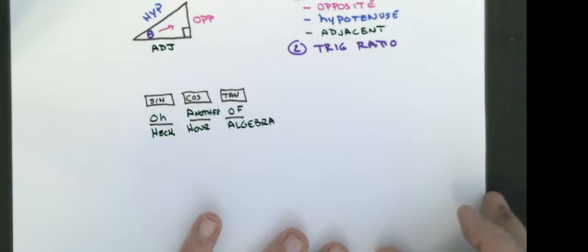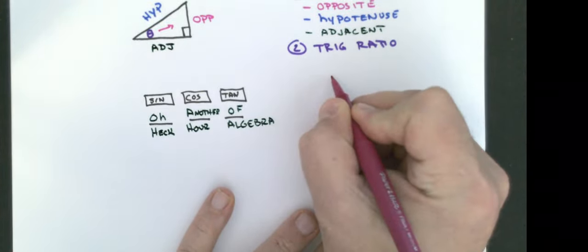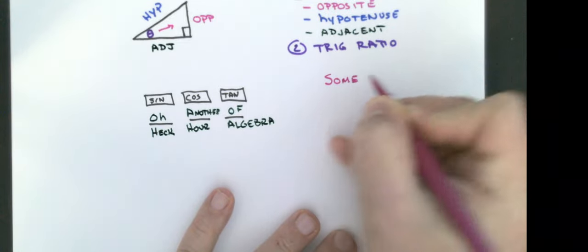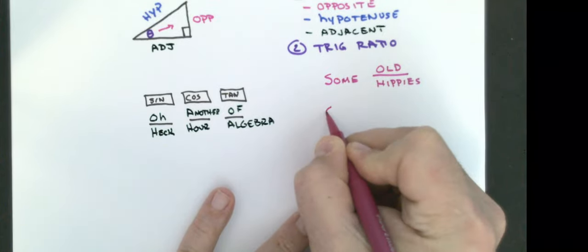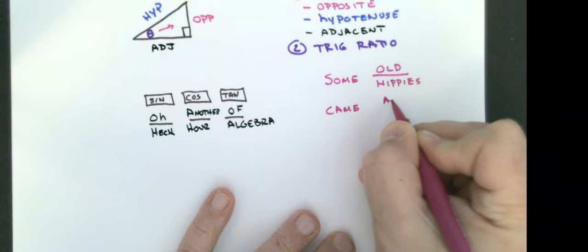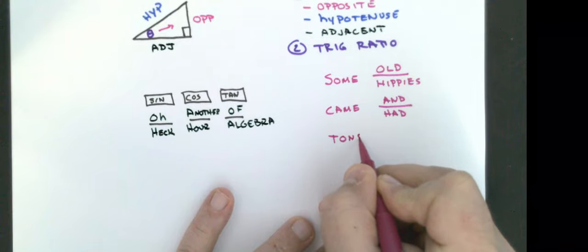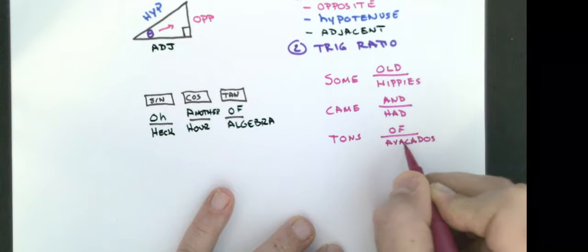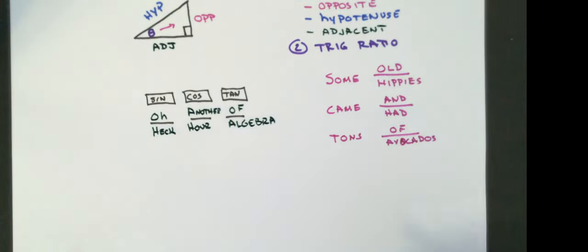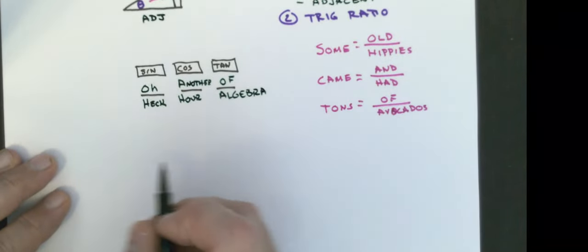The other way to come up with the exact same ratios is the sentence: 'Some Old Hippies Came And Had Tons of Avocados.' Both of these mnemonics give you the same actual ratios.